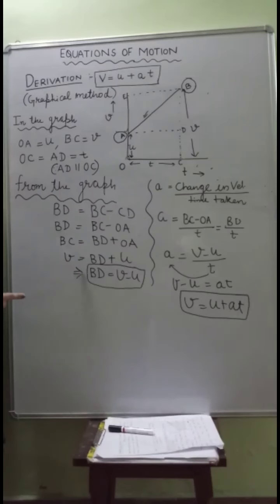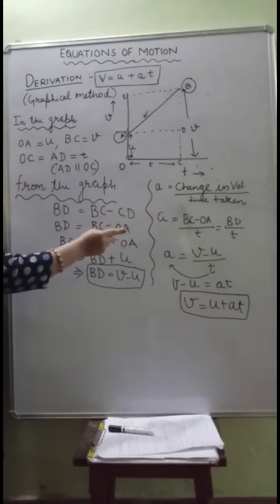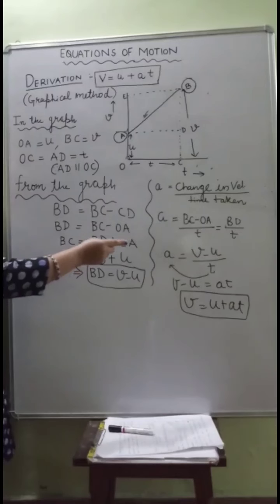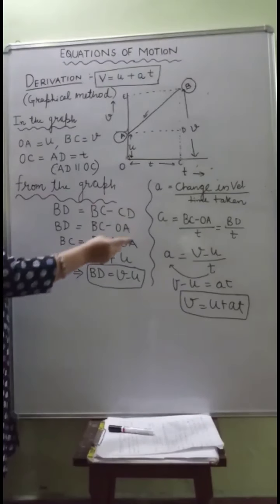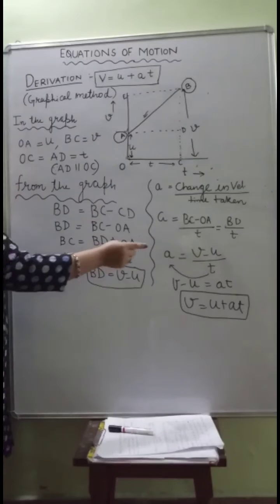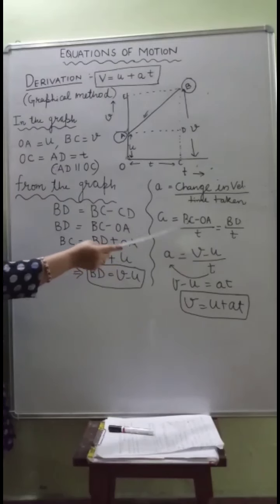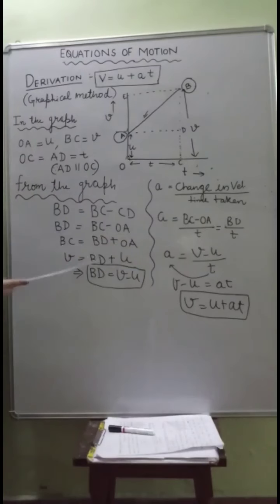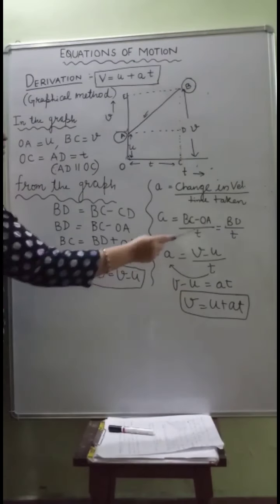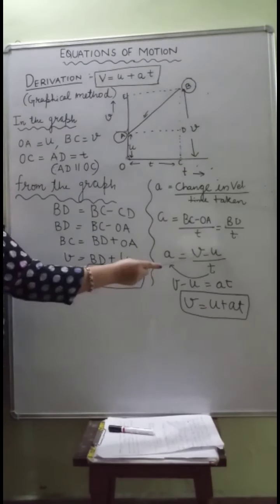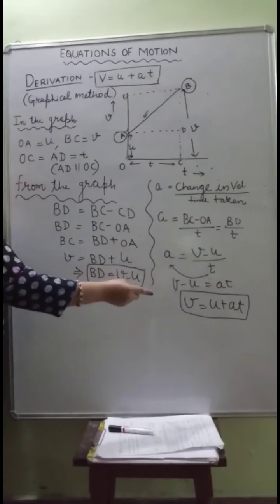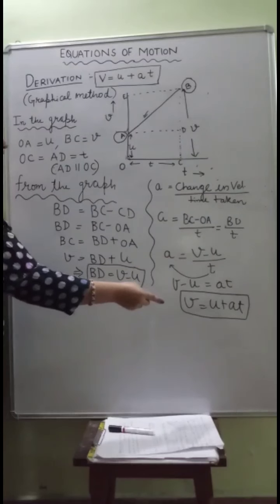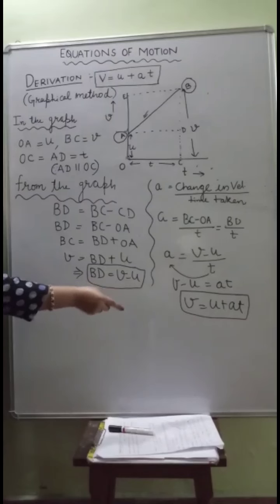We know the formula for acceleration: it is change in velocity divided by time taken. So a = (final velocity - initial velocity) / t = (BC - OA) / t. We have already shown that BC - OA equals BD, so a = BD / t. The value of BD is v - u, so a = (v - u) / t. By cross multiplication, v - u = at. Taking u to the right-hand side gives v = u + at. This is the derivation of the first equation of motion.